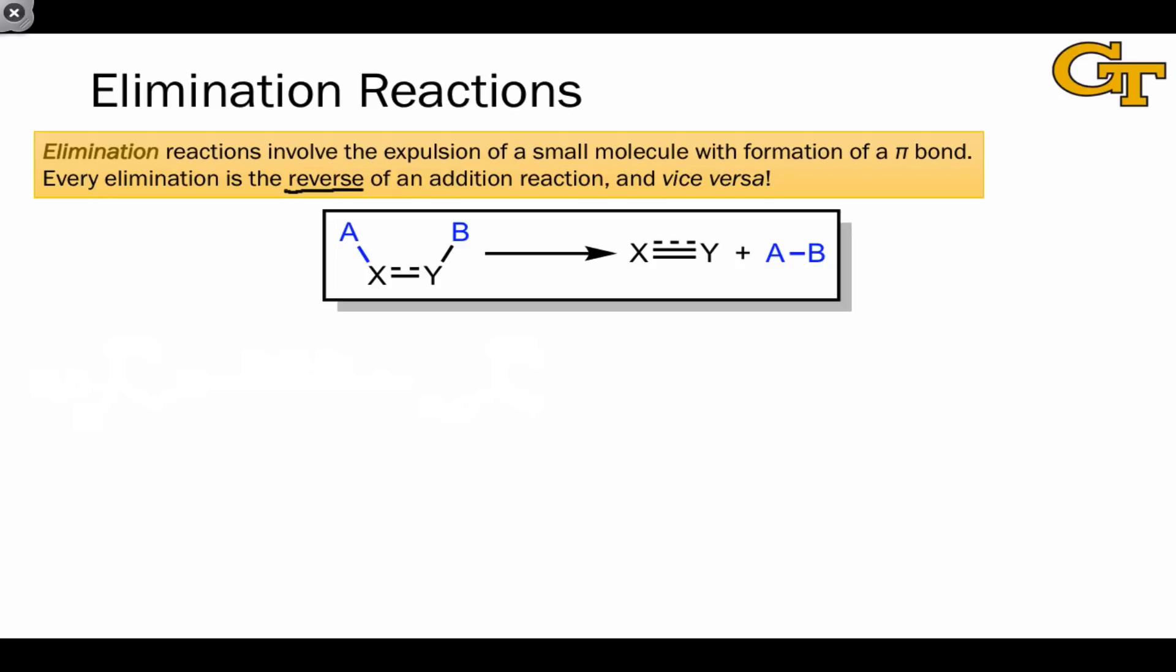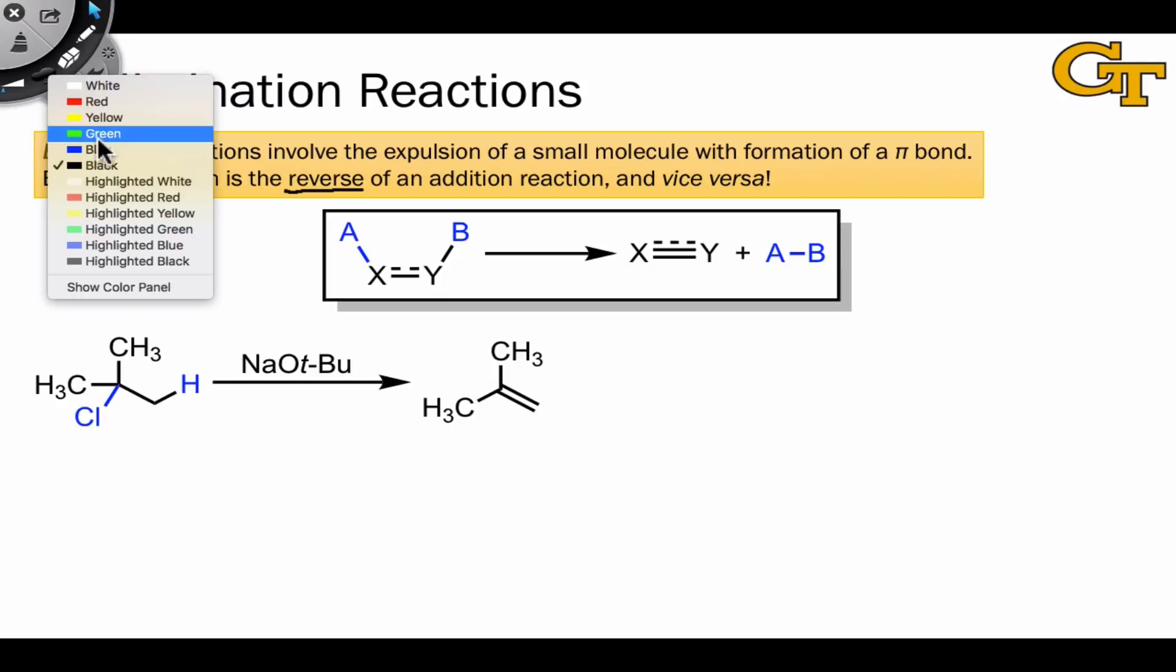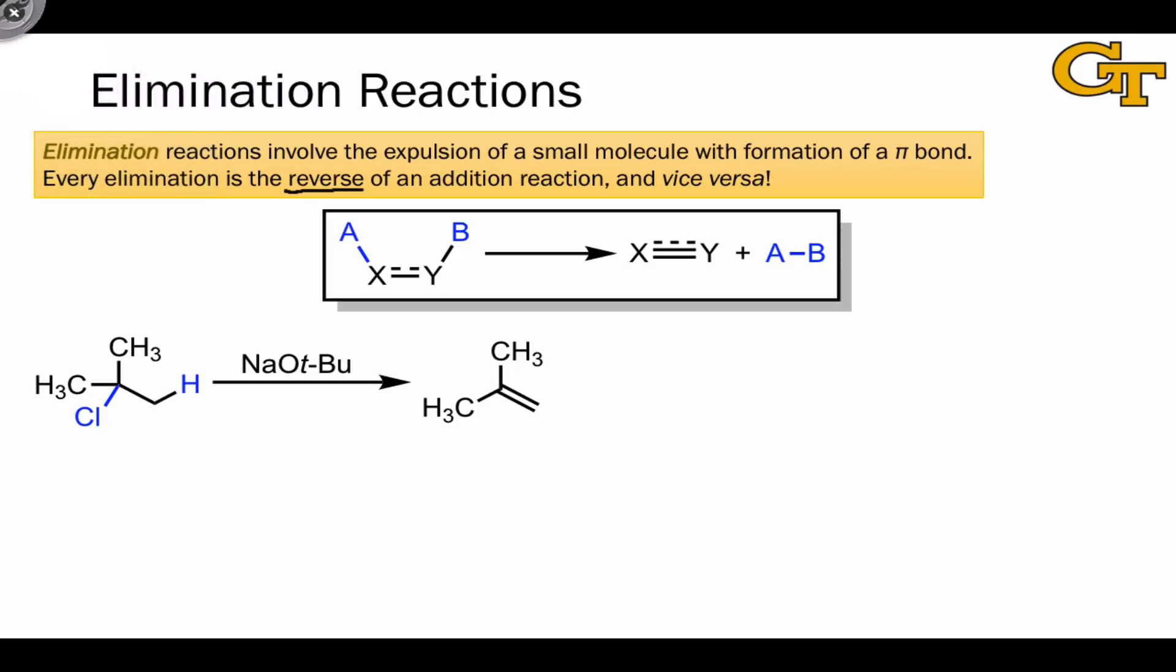Here's an example of an elimination reaction, and this is a common situation where the byproducts of the reaction aren't shown. Naively, we might think that since elimination is the reverse of addition, that the byproduct here should be the reagent of the addition, which was HCl. But that doesn't make sense.